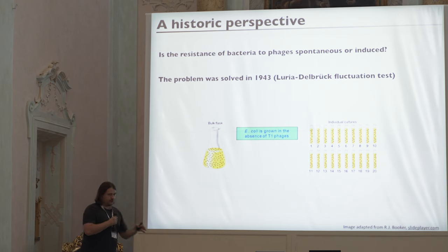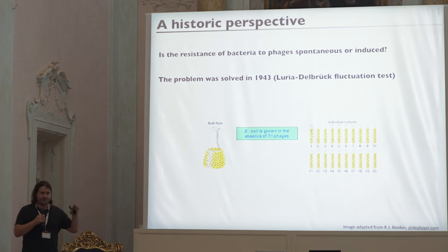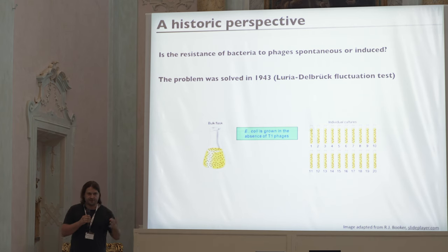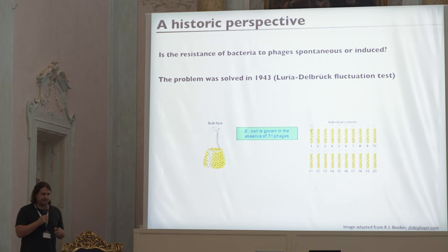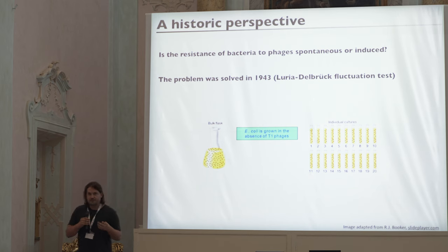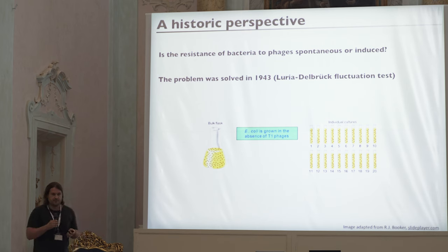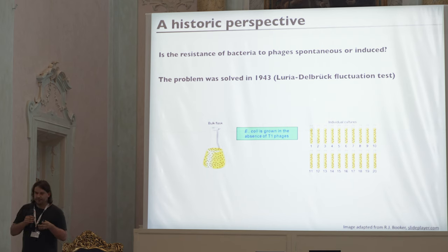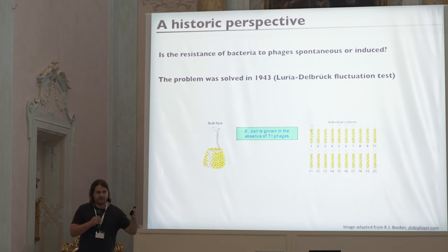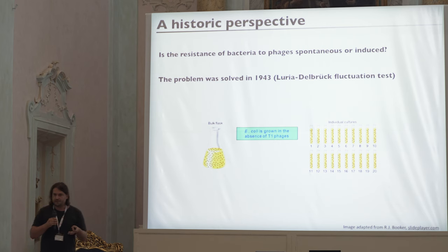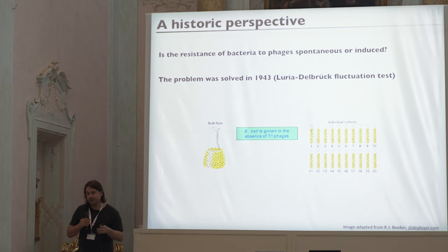Experimental evolution is not a new concept. In the 1920s and 30s people did experimental evolution on bacteria and phages — they grew bacteria in a petri dish, added phages, the bacteria died, but after a certain time the bacteria adapted. The important question at that time was: is this resistance pre-existing in the population, or is it a plastic response to the exposure?